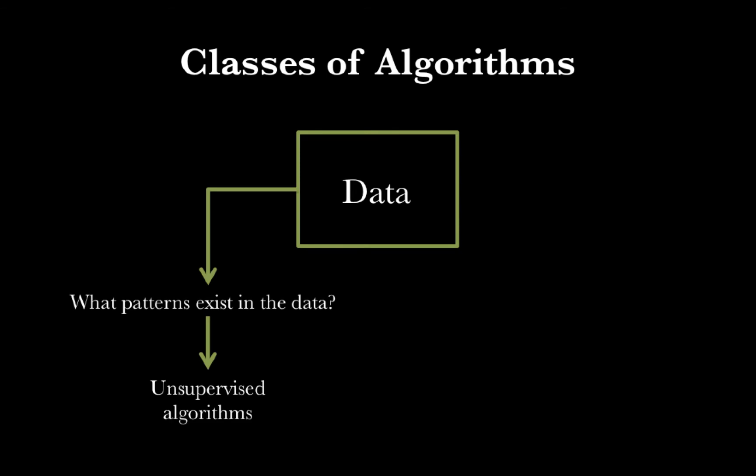The first class of algorithms are called unsupervised algorithms, and these algorithms help us extract patterns directly from the data without imposing any knowledge about the problem of interest on the computer. These unsupervised algorithms really help us answer what patterns exist in the data, sort of independent of what we know about biological systems.